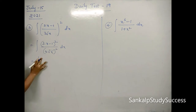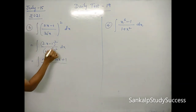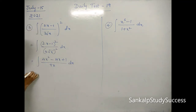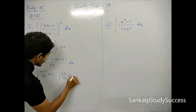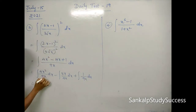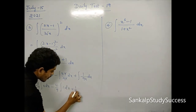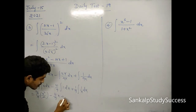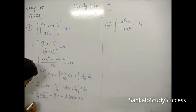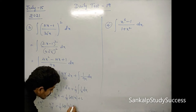After splitting: 4x²/9x gives 4/9 integral x dx; minus 4x/9x gives minus 4/9 integral 1 dx; plus 1/9x gives 1/9 integral 1/x dx. Evaluating: 4/9 times x²/2 = 2x²/9, minus 4x/9, plus 1/9 log|x|. So the final answer is 2x²/9 - 4x/9 + (1/9) log|x| + c.